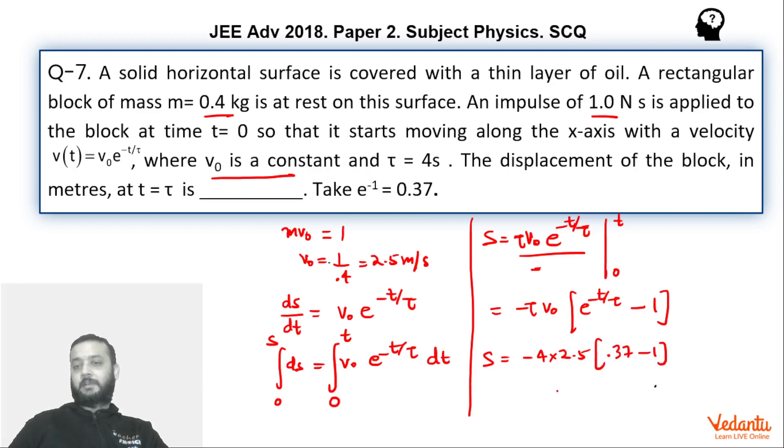Let us put the values now because you have to find the displacement at t equals 4 seconds. So basically if you put tau is 4, v0 is 2.5. If you put here t equals tau so this will become e to the power minus 1 which is 0.37. So 0.37 minus 1. Hence you see that this becomes 10 times 0.63 which is nothing but 6.3 meters. So answer will be 6.3 meters.